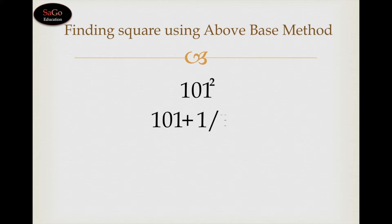101 plus 1 makes 102, write 102 as it is, put a slash. Now square of 1 is 1 but we will write 01.